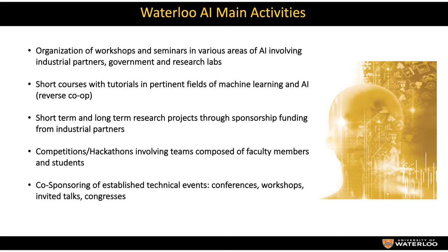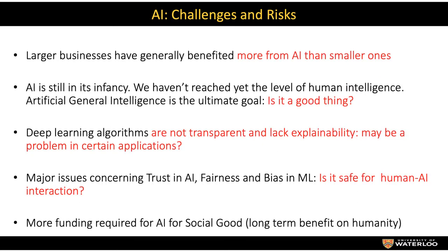Waterloo AI's main activities include organizing workshops and seminars in various areas of AI involving industrial partners, government, and research labs. We present short courses with tutorials in pertinent fields of machine learning, provide short-term and long-term research projects from six months to four or five years through sponsorship funding, and organize hackathons and competitions involving teams of faculty members and students. We also participate in international conferences, workshops, invited talks, and cooperate with Canadian, US, and international institutions in Europe and Asia.